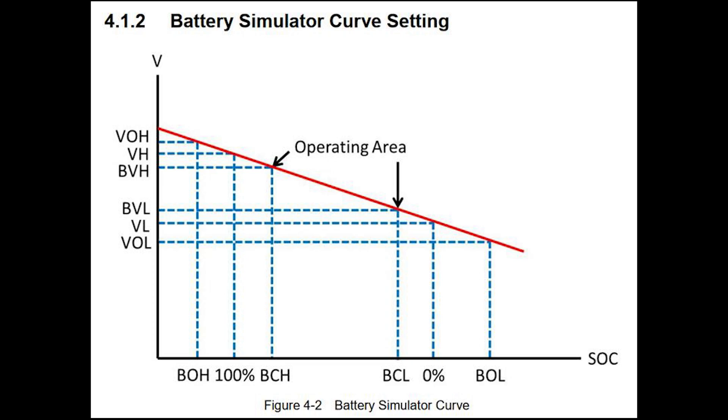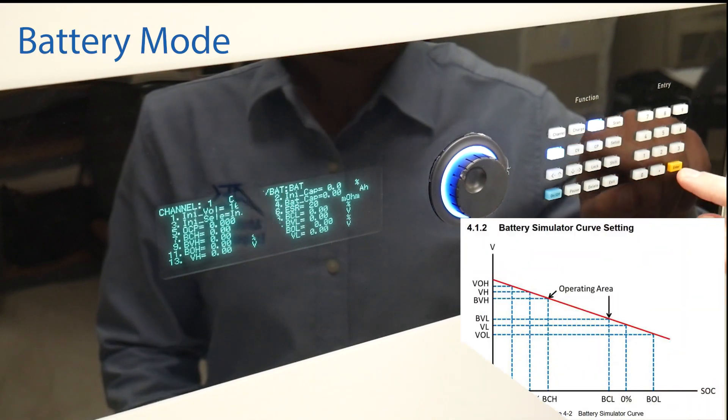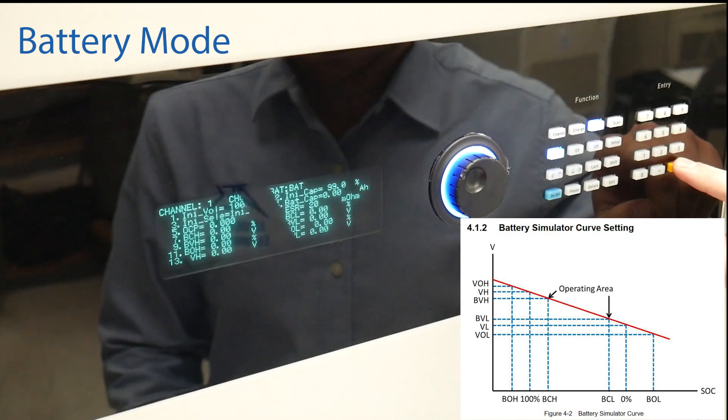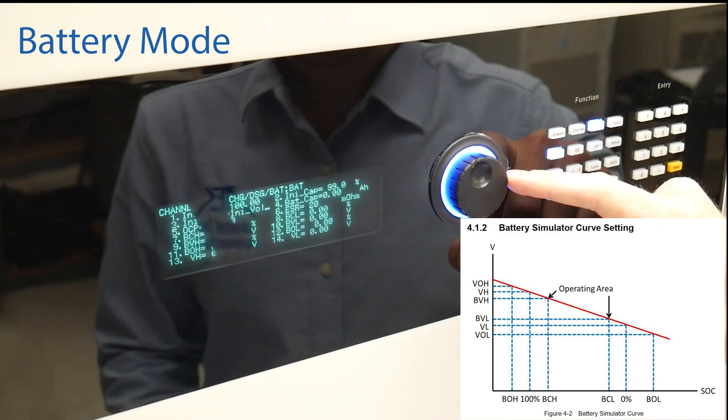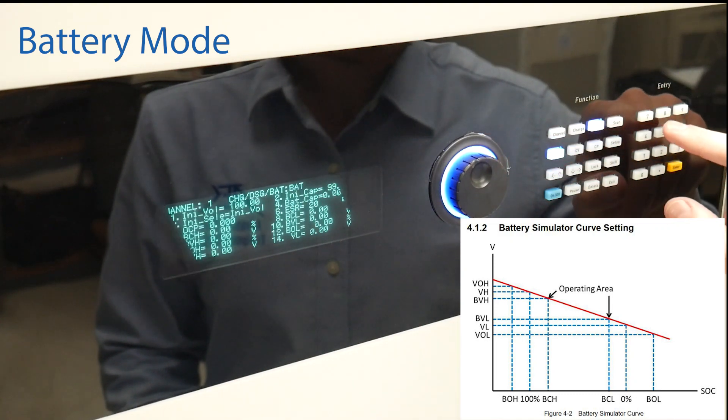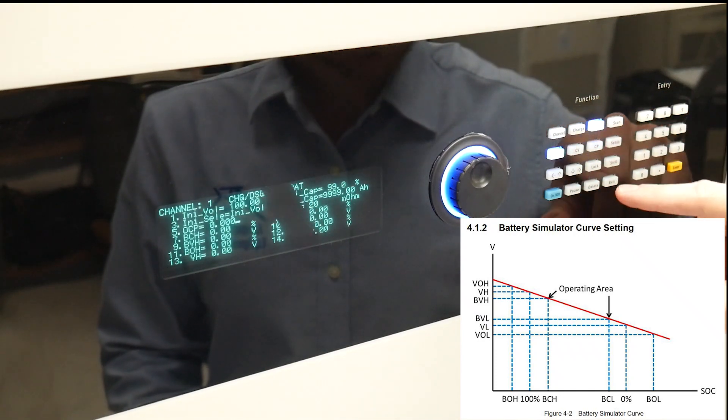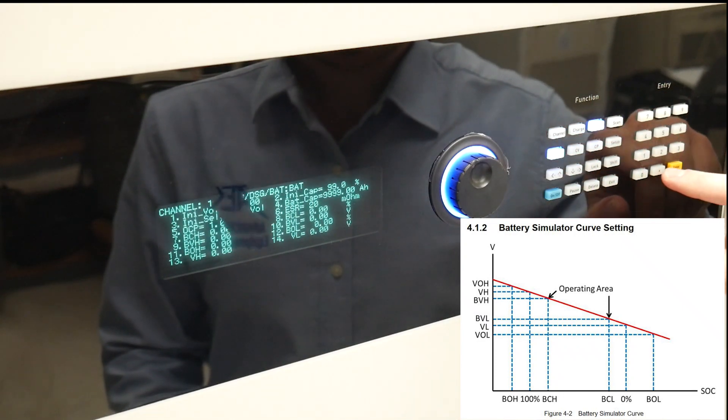Basically we are characterizing a battery with an initial voltage of 100 volts and a capacity of 9999 amp hours. This is just for demo purposes. Voltage and battery capacity change over time and this is defined by multiple parameters here.